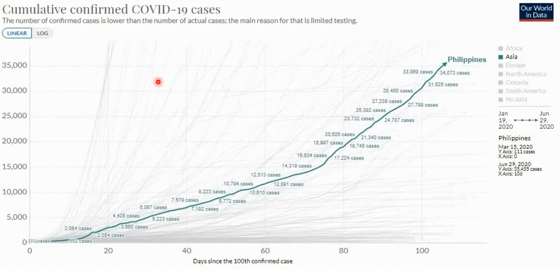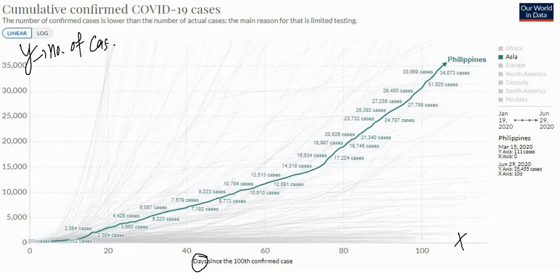If you remember, we have here our graph of the cumulative COVID-19 cases from January 19, 2020 to June 29, 2020. As you can see, we have here our x-axis as the number of days and our y-axis as the number of cases.